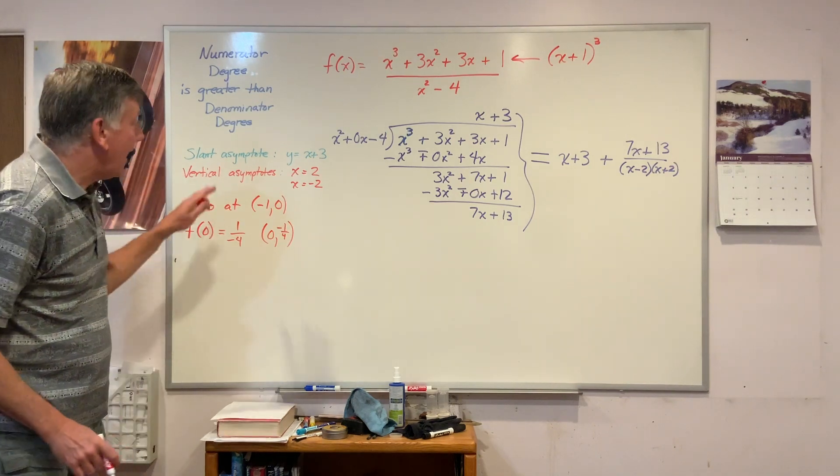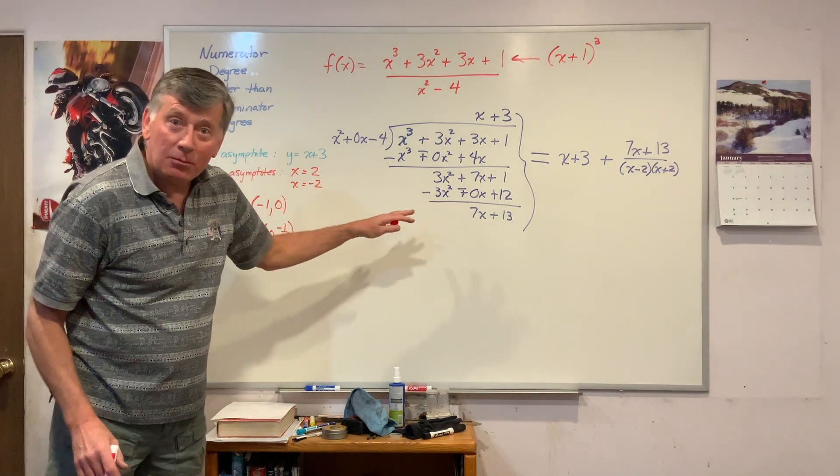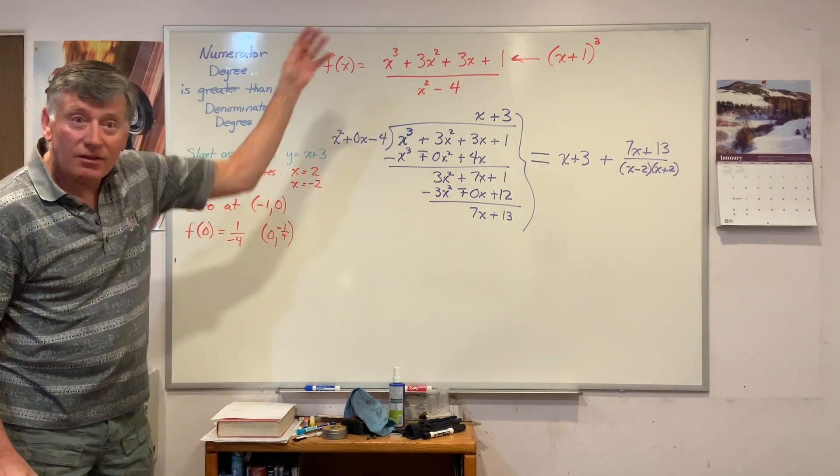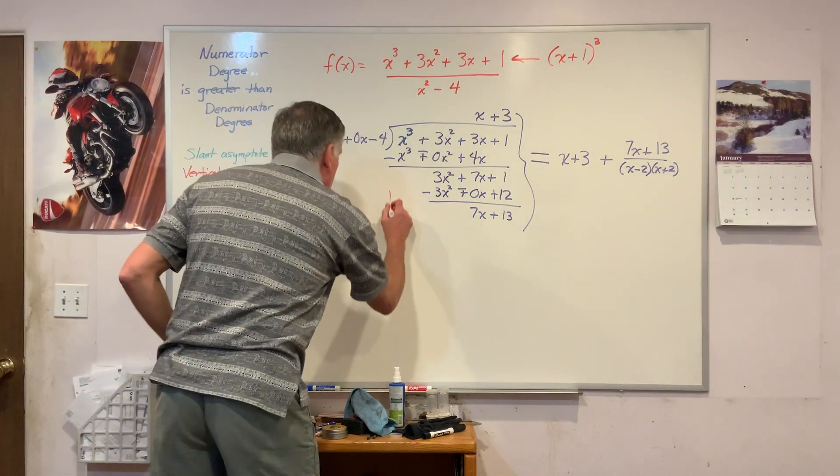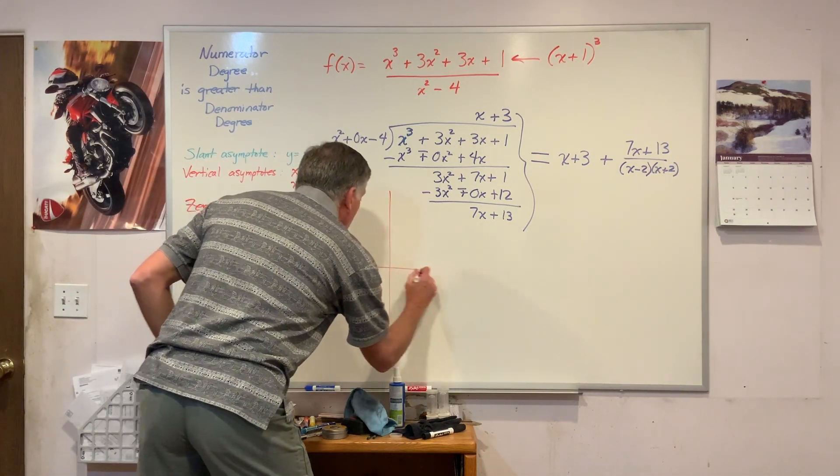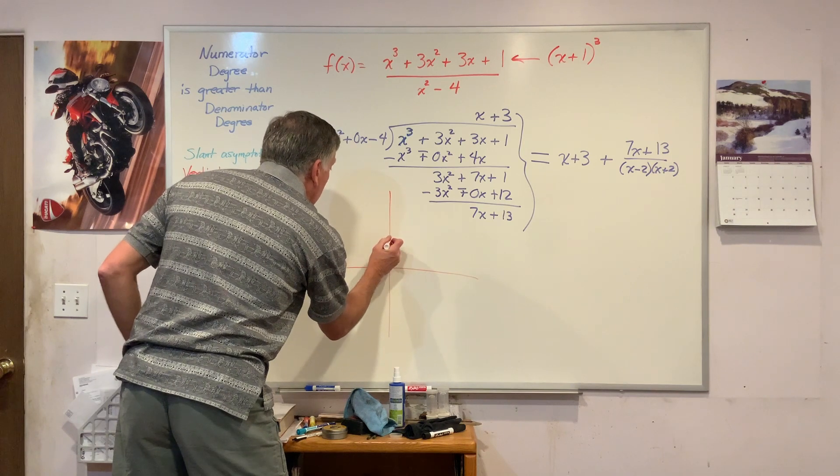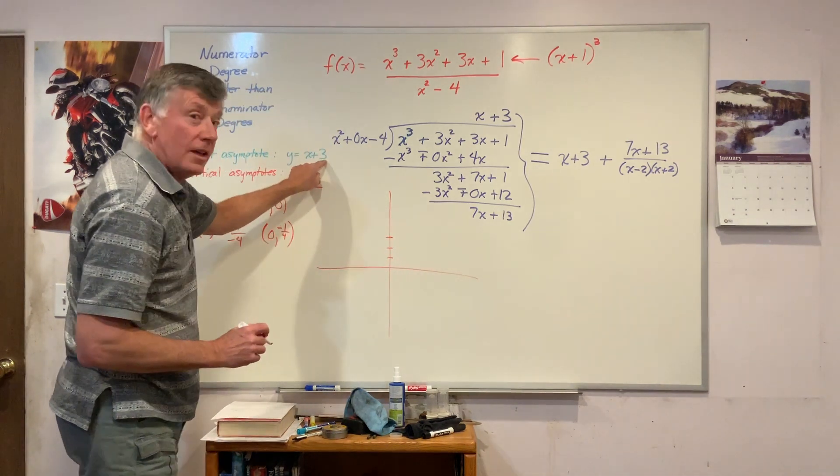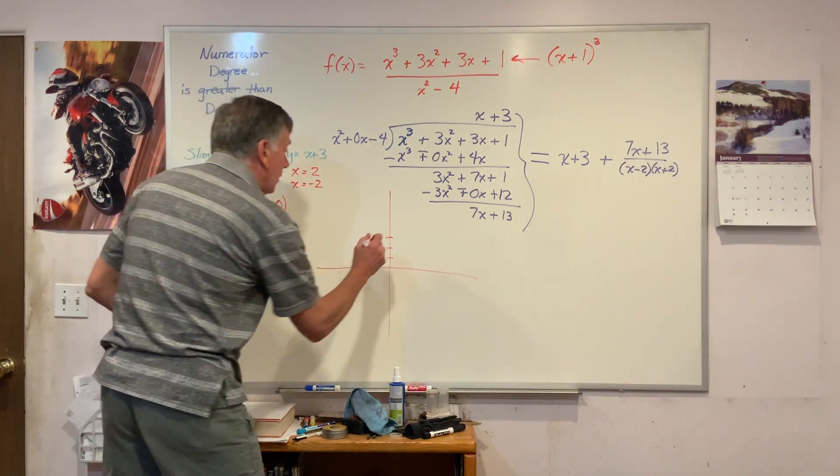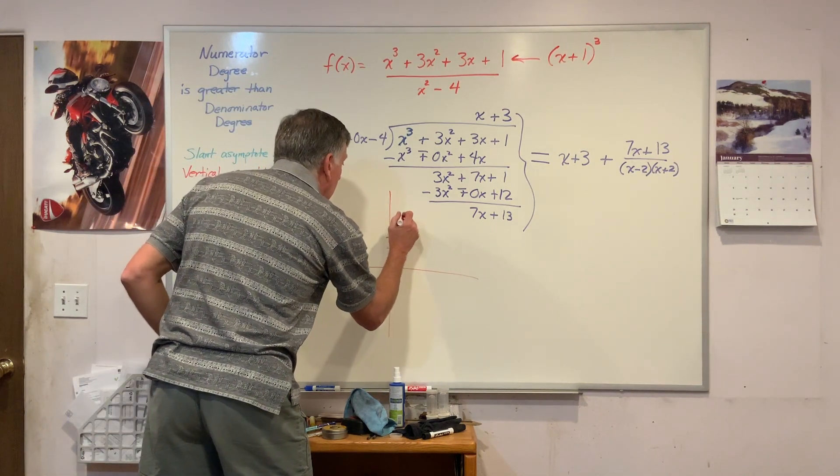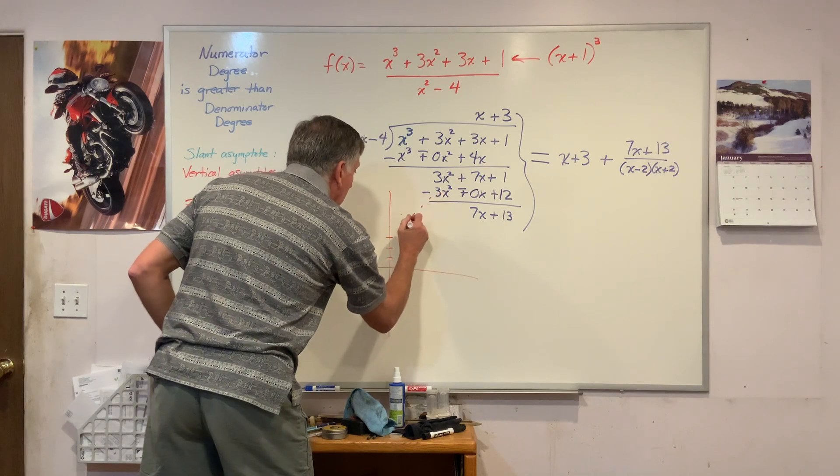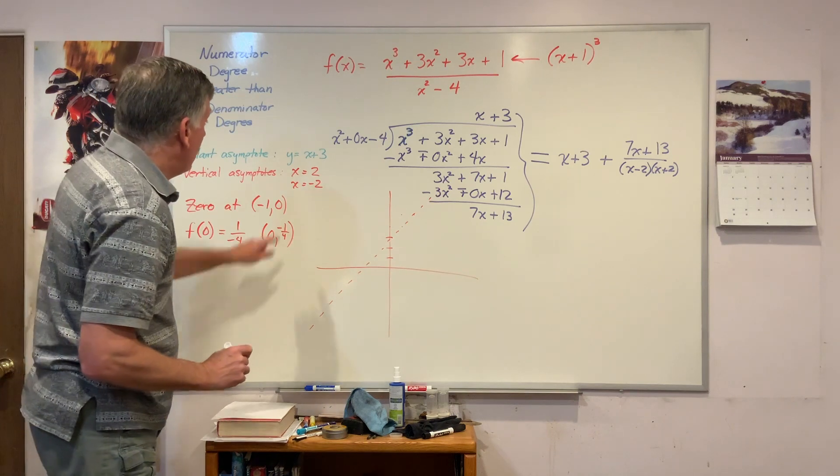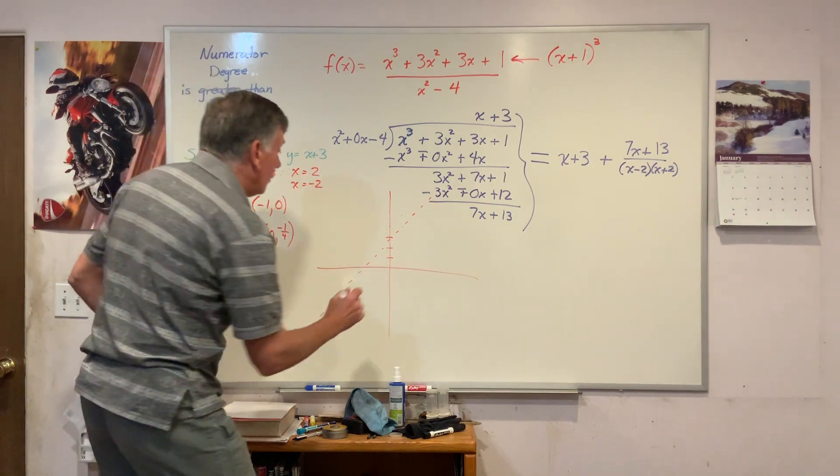I'm ready to graph. I know a lot. I'm not going to need to plot any points. I know all that I need to know from this work right here. My slant asymptote, the y-intercept is at 3, and it has a slope of 1, and there it is.